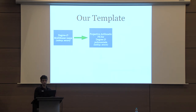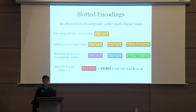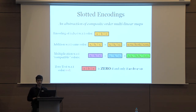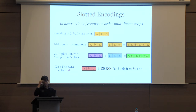Let me explain the last step: getting PAFE for degree-d polynomials from degree-d multilinear maps. To do this, let me define an abstract notion called slotted encodings, which is an abstraction of composite-order multilinear maps. As in composite-order multilinear maps, we encode a vector rather than just one element. Suppose you have a vector (A, B, C)—you encode it with respect to some color. You can perform addition and multiplication on these encodings: addition requires encodings of the same color, resulting in component-wise addition.